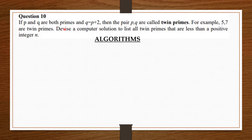If p and q are both primes and q equals p plus 2, then the pair p, q are called twin primes. For example, 5 and 7 are twin primes. Devise a computer solution that lists all twin primes that are less than a positive integer n.